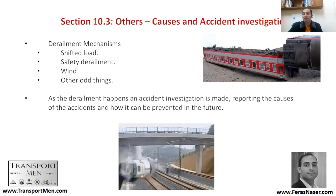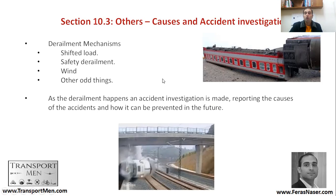Other accidents can happen because of wind or shipment. For example, an accident in China happened because of wind, and there was another accident in Japan that happened because of crosswind — the wind coming perpendicular to the train body. The load or shipment being carried by the train can also be unevenly distributed and might result in a derailment. When a derailment happens, an accident investigation is conducted with proper reporting, failure analysis, and understanding of the root cause.